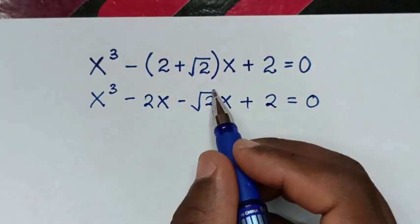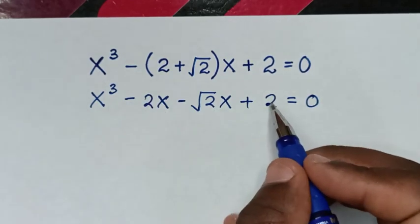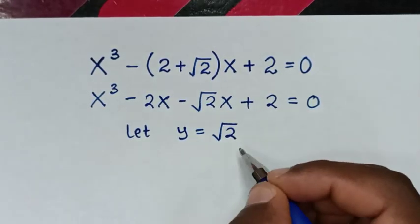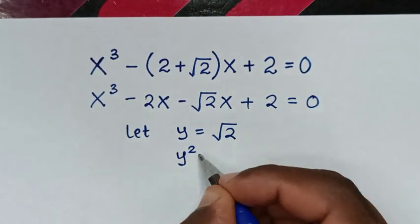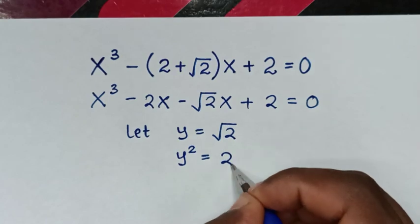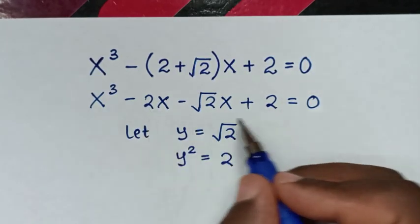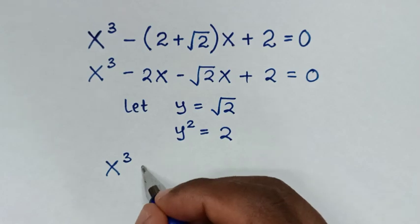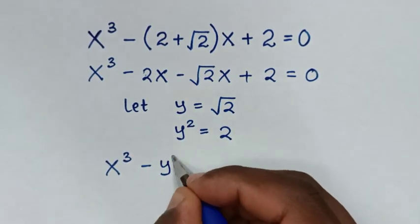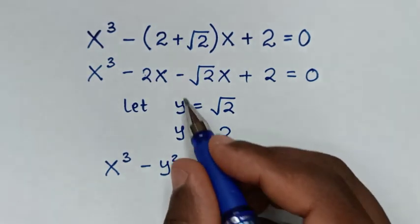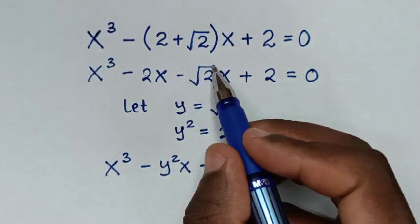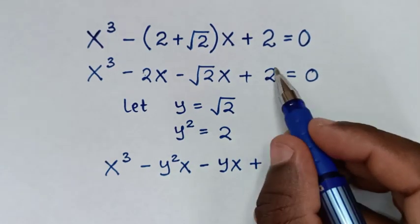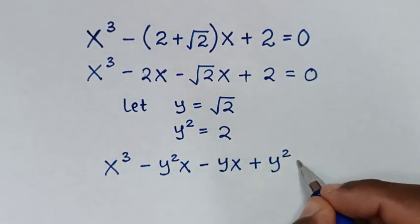In the next step, we note that square root of 2 and the number 2 are related. We let y equal square root of 2, so squaring both sides gives y² equals 2. We substitute y² for 2, giving us: x³ minus y²x minus yx plus y² equals 0.